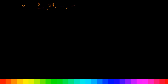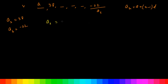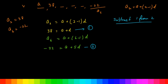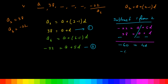Part 5: the series is dash, 38, dash, dash, dash, -22. So A2 = 38 and A6 = -22. Using the formula: A2 = A + D = 38, which is equation 1. A6 = A + 5D = -22, which is equation 2. Subtracting equation 1 from equation 2: A cancels, leaving 4D = -60, so D = -15.